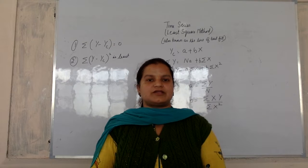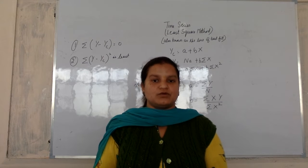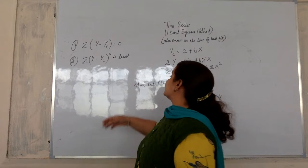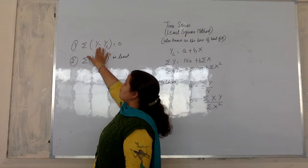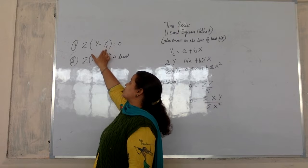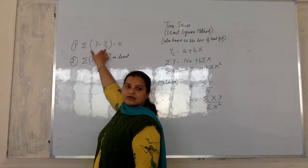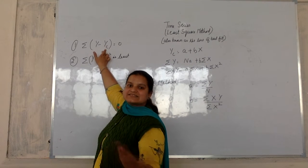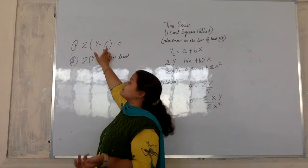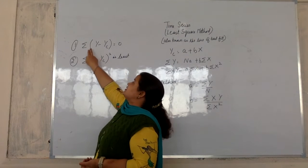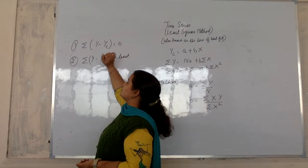In the least square method, two conditions must be fulfilled. That is summation y minus yc. Yc is a calculated y or estimated y. That is the trend value. The summation y minus yc is actually equal to zero.